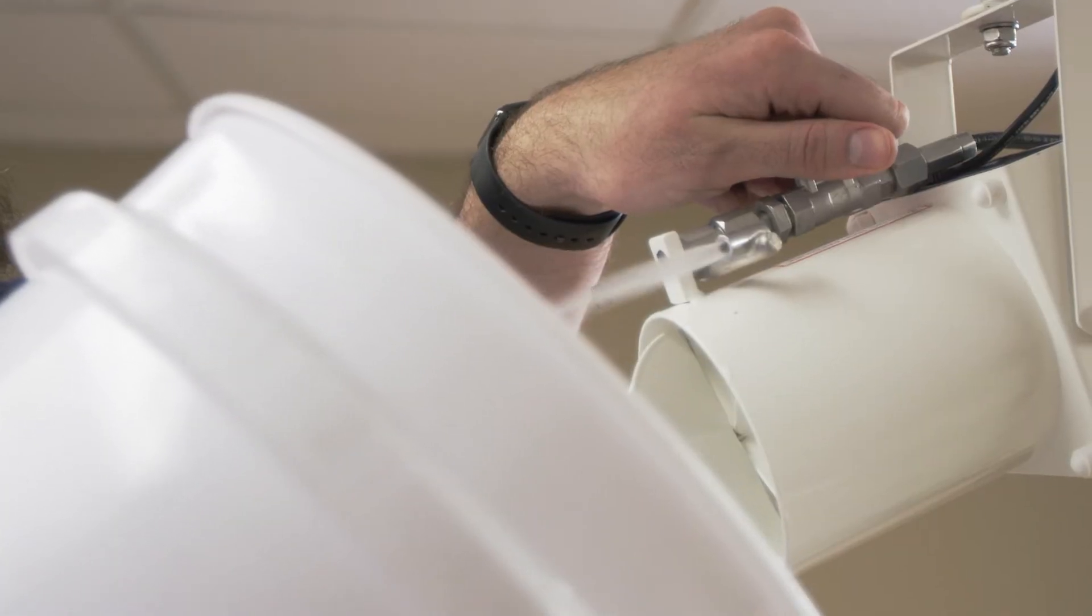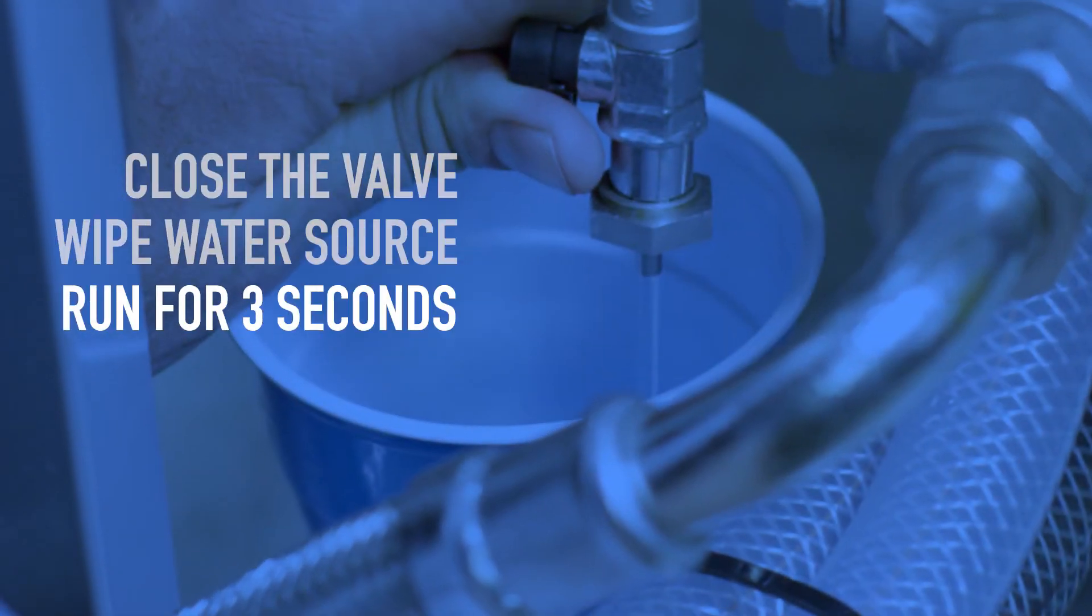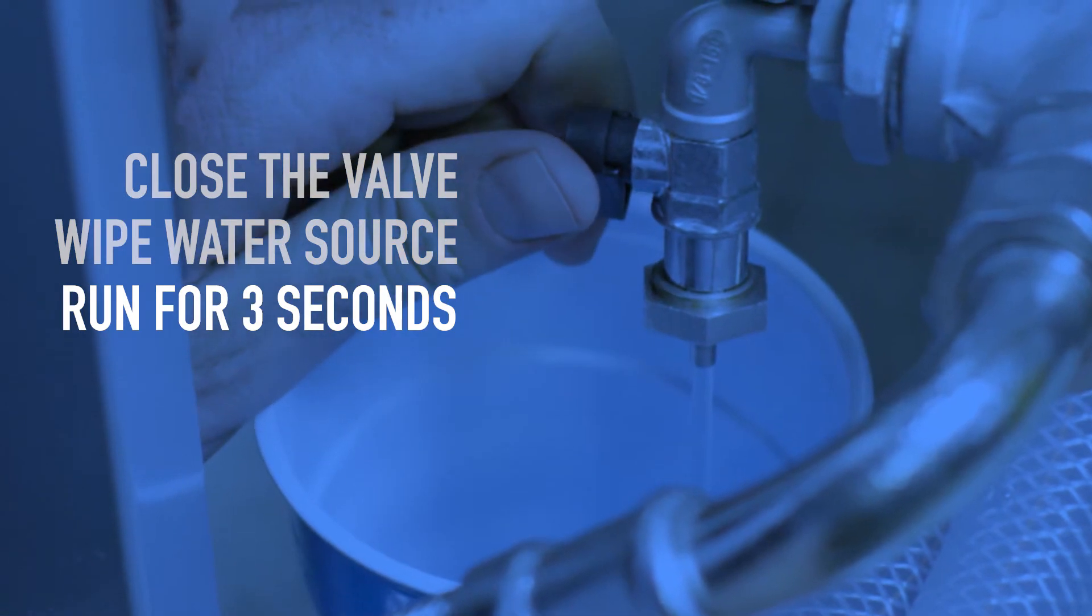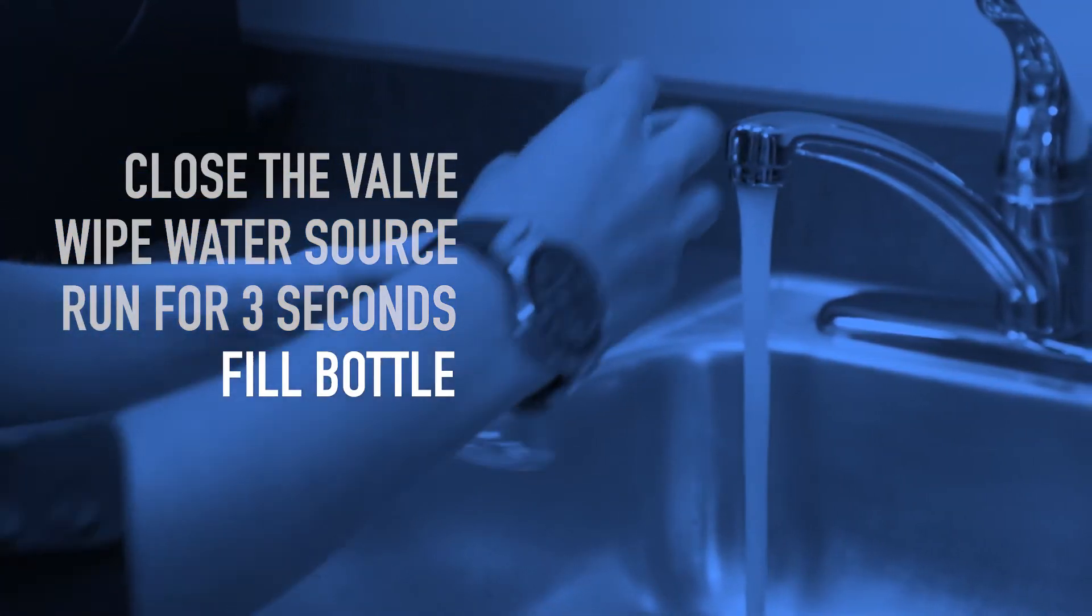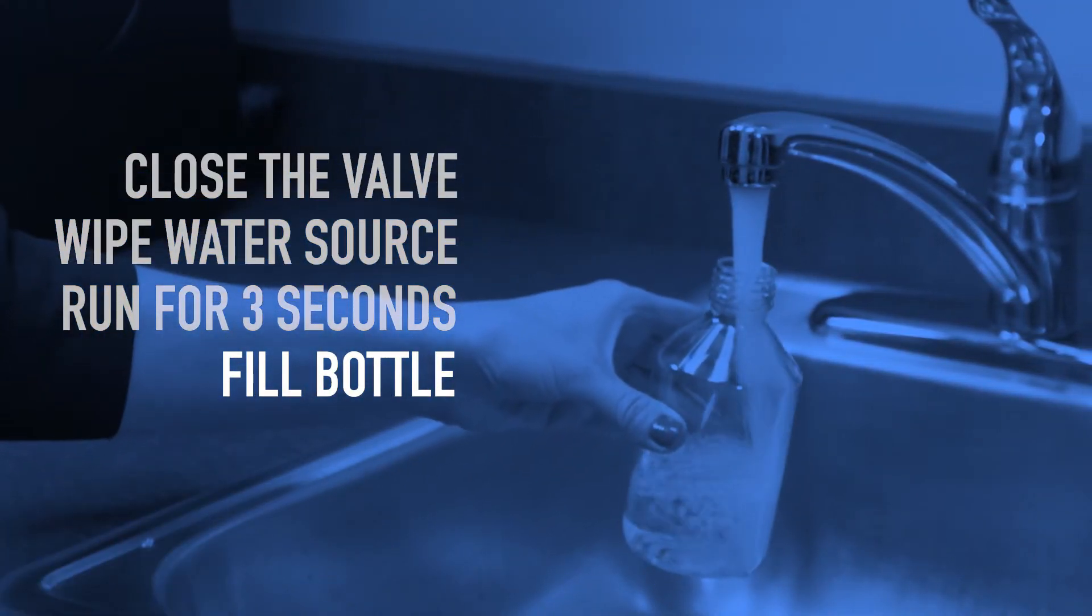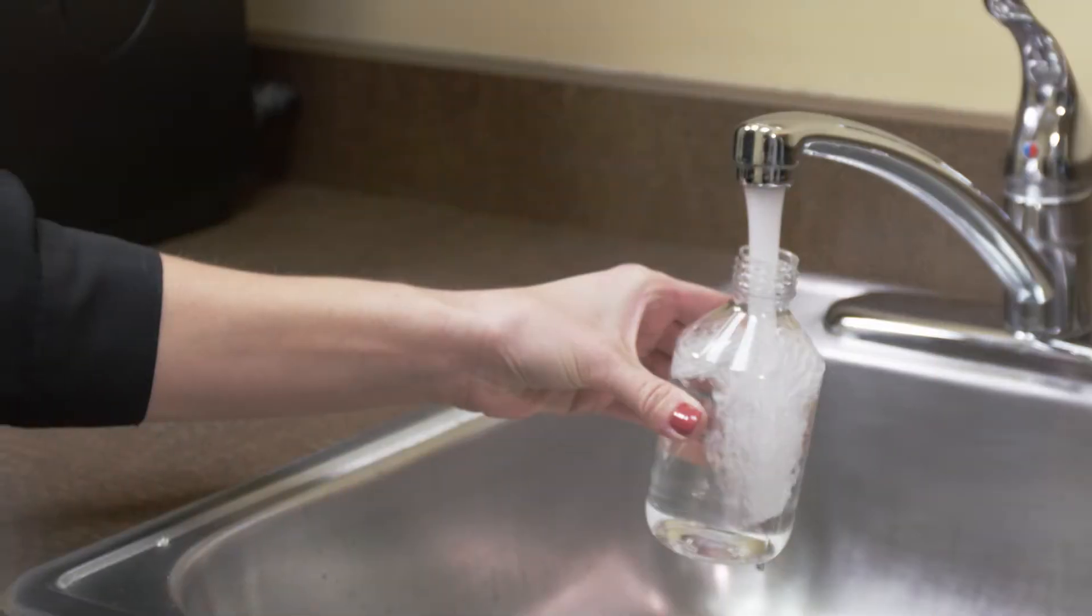Turn on the water source and be sure to let it run for three seconds in order to flush out any stagnant water. Then, fill one of the sterile bottles that came with your kit all the way to the neck and seal it.